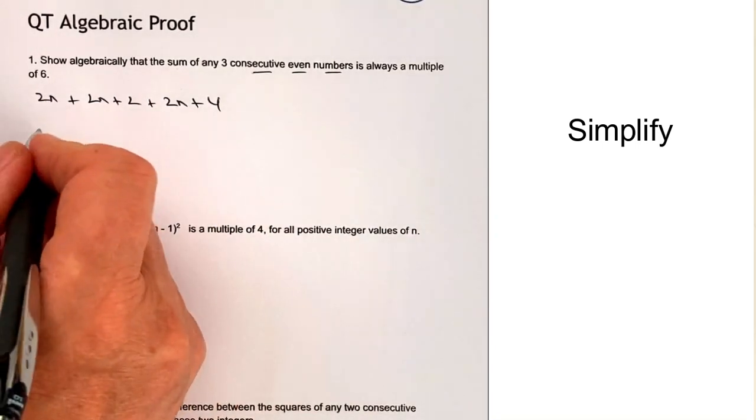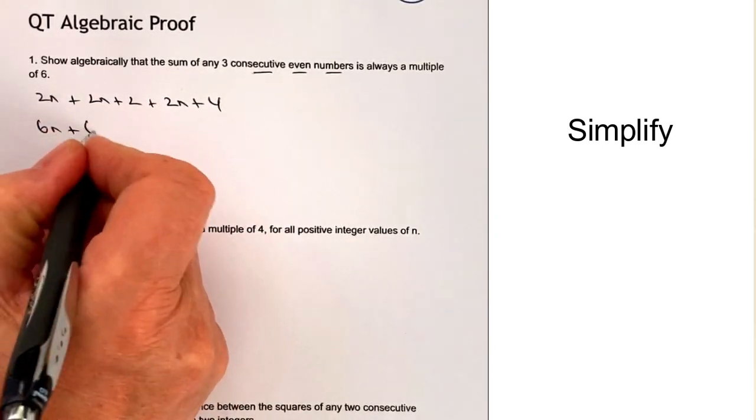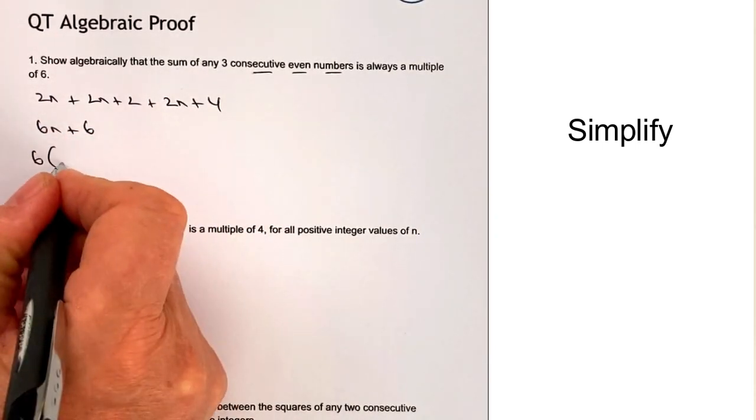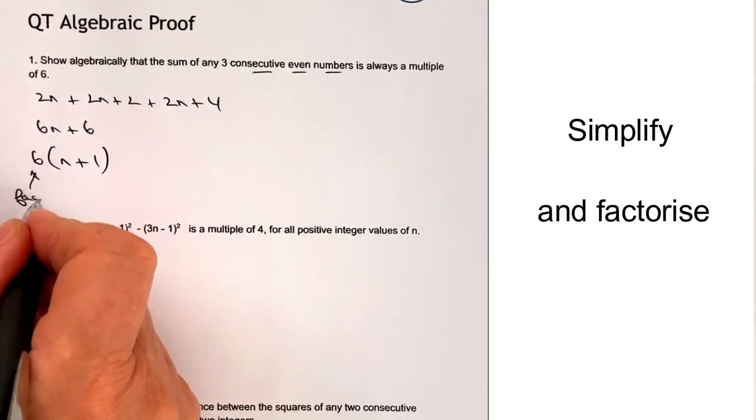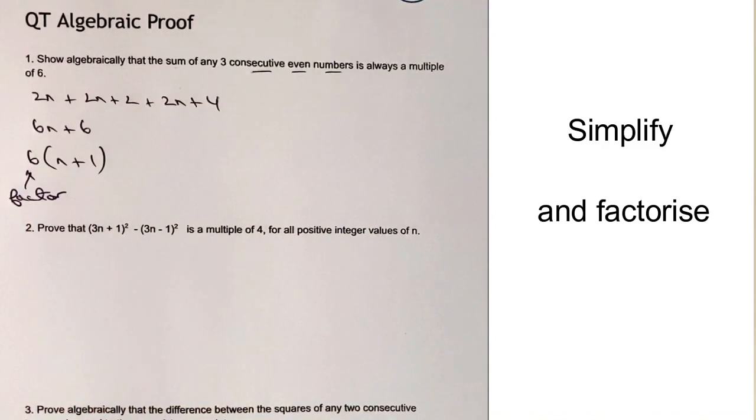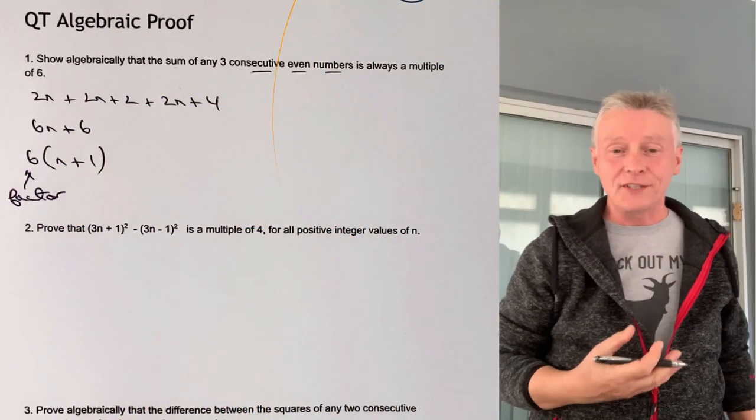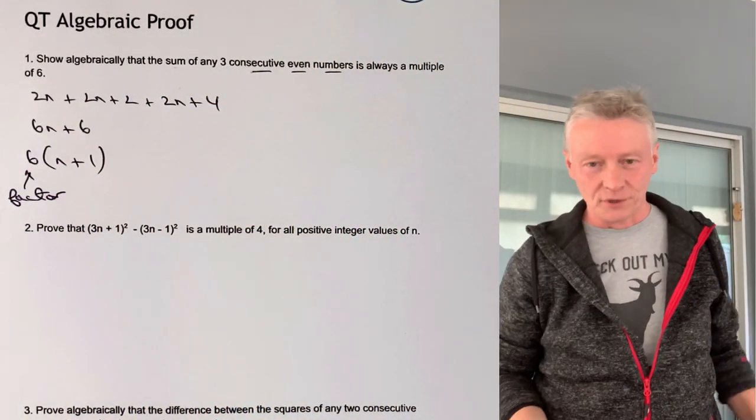Okay, when we add up all of that and simplify it, we're going to get 6n plus 6, and therefore I can write that as 6 being a factor. And if 6 is a factor, it basically means that the expression must be a multiple of 6.